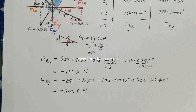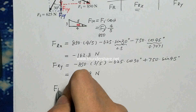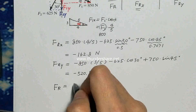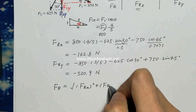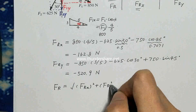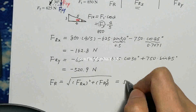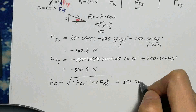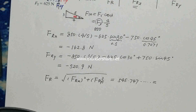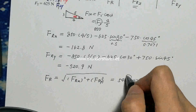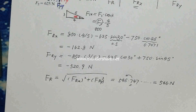Now we have the x and y components of the resultant force. The magnitude of the resultant force R is found using the standard equation. Using the calculator you get a value — bear in mind this is the final answer so we use three significant figures — which rounds up to 546 newtons. That's the magnitude of the resultant force.